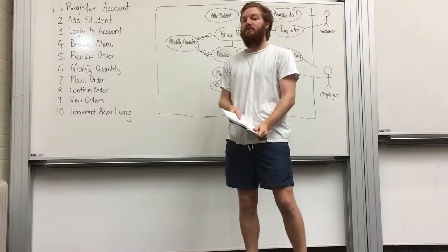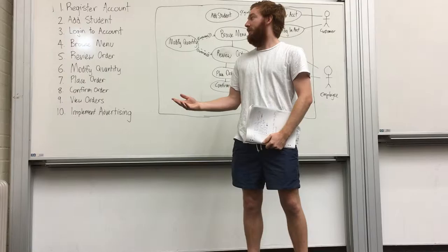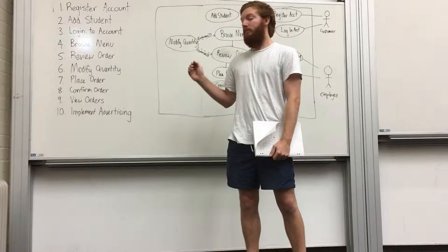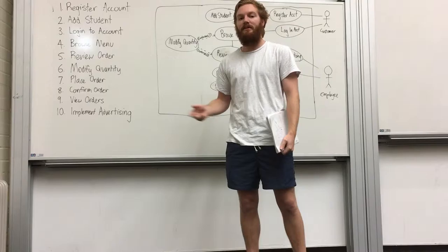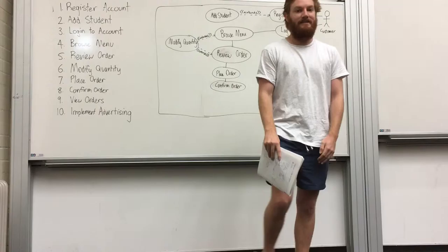These include the ability to register an account and add a student to that account, then log into the account, browse the menu, review the order, modify the quantity, place the order and get confirmation. Also, the staff at SSPS needs to be able to review these orders and implement advertising. Now we're going to talk about the individual parts we've worked on.